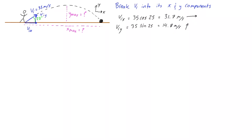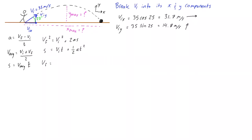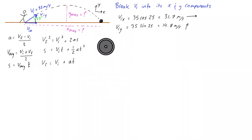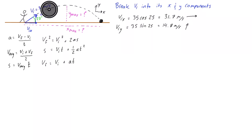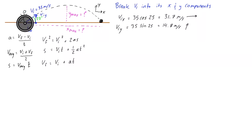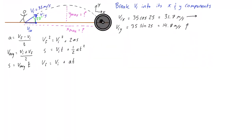Now we're going to need the kinematic equations. We'll use them separately for the vertical motion and separately for the horizontal motion. The soccer ball travels in a parabolic path, but its initial y velocity is 14.8 meters per second upward. Gravity still acts on it at negative 9.81 meters per second squared, the same as if there were no horizontal velocity. So we can ignore the horizontal velocity when analyzing the vertical motion by itself.